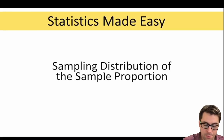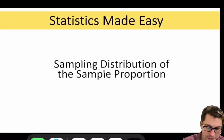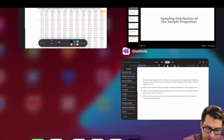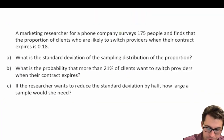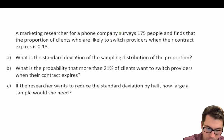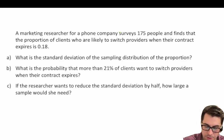In this video we're going to continue working with the sampling distribution of the sample proportion and continue with more practice problems. A market researcher for a phone company surveys 175 people and finds that the proportion of clients who are likely to switch providers when their contract expires is 0.18. What is the standard deviation of the sampling distribution of that proportion?